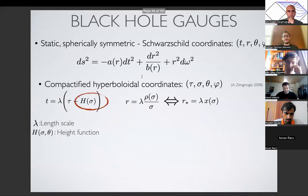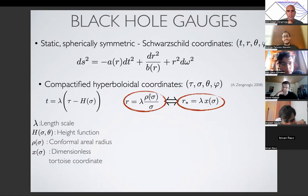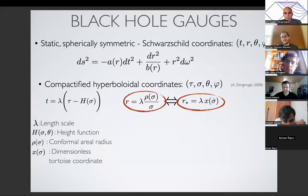First, there is this lambda that I like — it's just a length scale. It can be the mass, it can be the horizon radius — you can choose. I like to keep track of a length scale just because I can do dimensional analysis more easily, and compare to numerical results where they set m=1, which is a particular choice for the length scale. Important here is perhaps this height function h, which is the one that's going to deform the time coordinate into the hyperboloidal coordinates. And of course there is something we need to do to compactify the radial direction — here I'm compactifying directly by R = 1/σ. There is also a free function that we can choose, which will be related to the conformal areal radius.